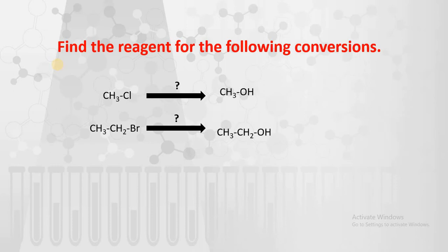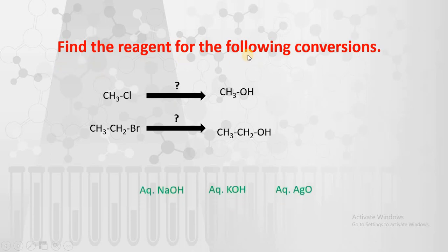Here are some questions. Find out the reagent for the following conversions. I have converted alkyl halides into particular alcohols. If you see, only chlorine is replaced by this hydroxy group, and here bromine is replaced by this hydroxy group. We have to find out the reagent for this particular conversion.